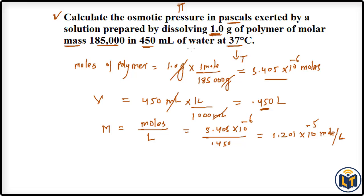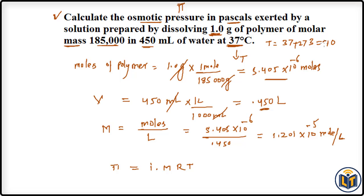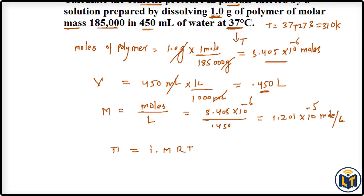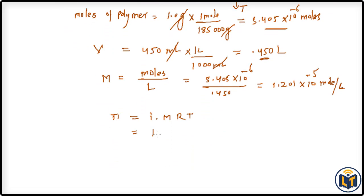Now we apply the osmotic pressure formula: π = i × M × R × T, where M is molarity, R is the gas constant, and T is temperature in Kelvin. The van't Hoff factor i for a polymer is 1. Temperature must be converted: T = 37 + 273 = 310 K.